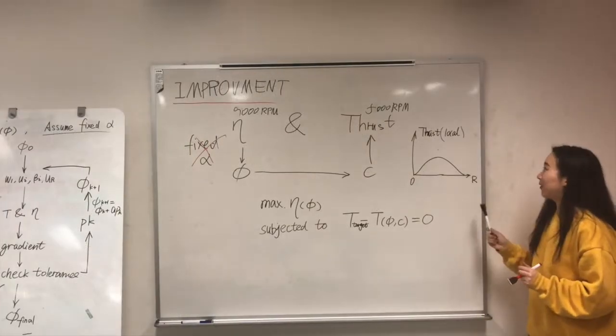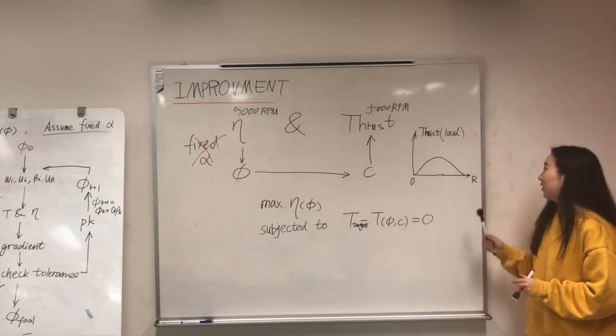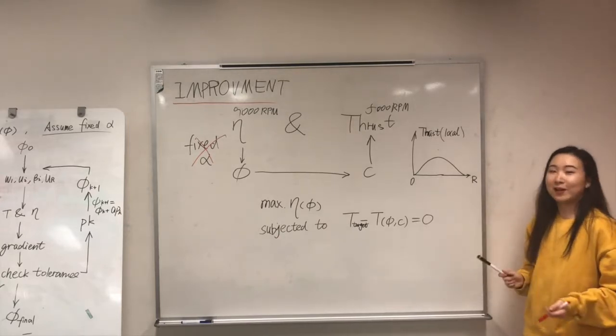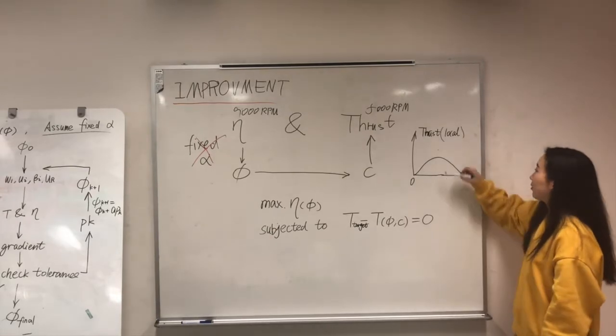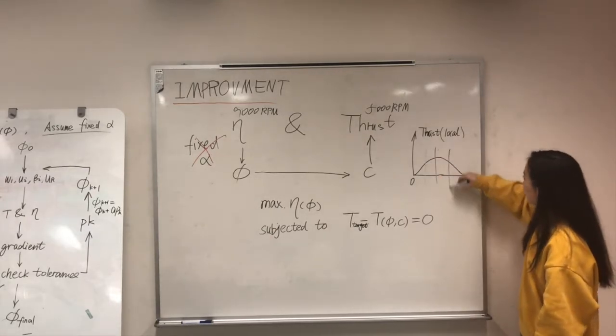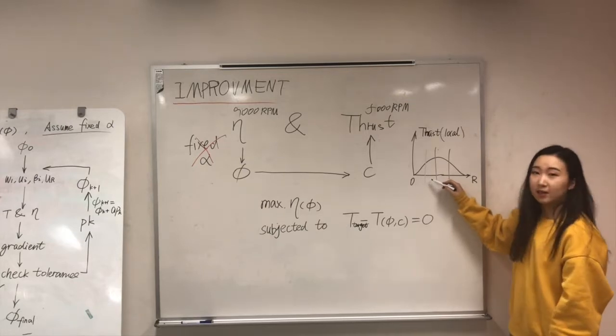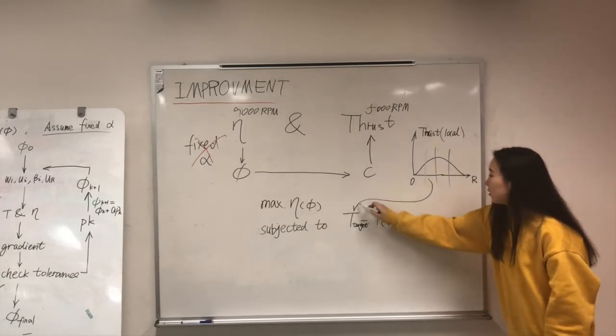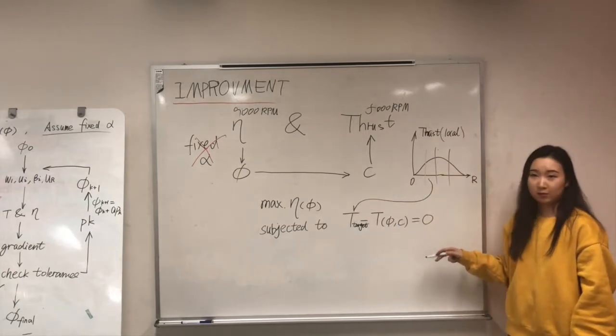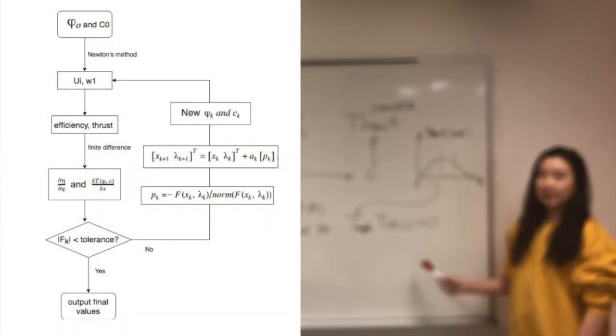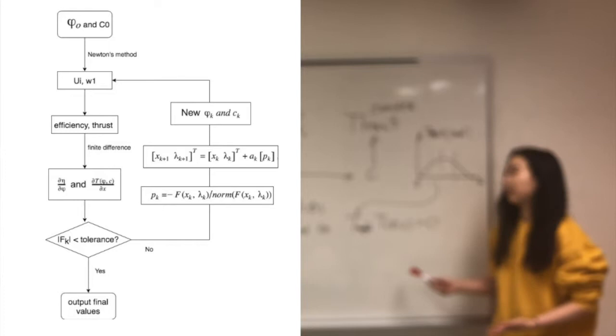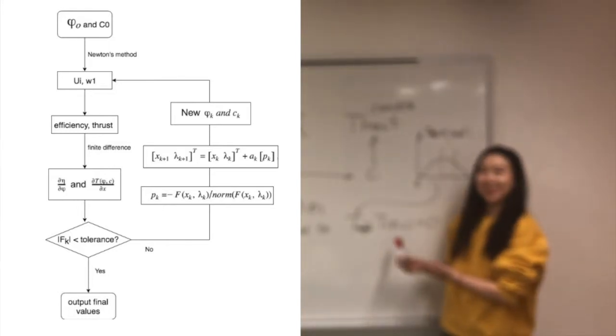Now, in order to introduce the thrust into this formula, we need to add another constraint. We firstly define the thrust distribution along the blade by defining a spline. With this spline, we can get the local thrust at any cross section. So we plug in this local thrust into this equation, and it will be our constraint. This new optimization process is detailedly shown in our report. So if you want to know more about this, just look at the report.